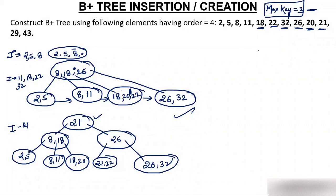Now insert 29. Where will 29 go? 29 comes in the middle of 26 and 32. There is no issue — I insert 26, 29, and 32 in that leaf node.